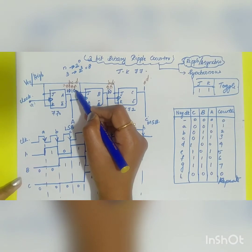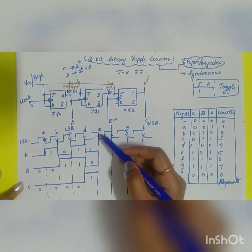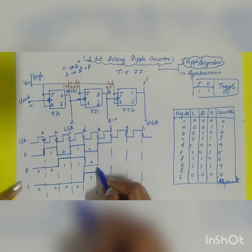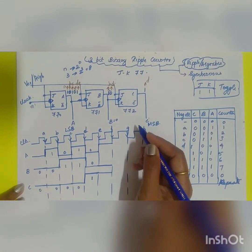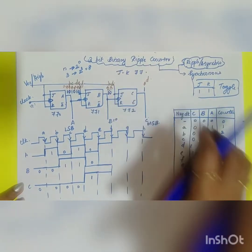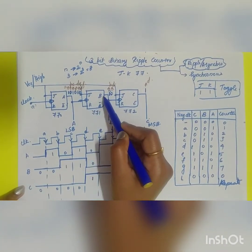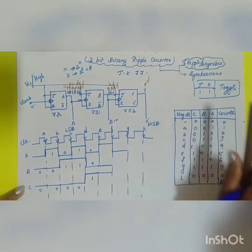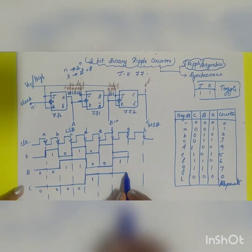During the next clock pulse E, A toggles from 0 to 1. Since A goes high (positive), B and C remain unchanged. During clock pulse F, A toggles from 1 to 0. This triggers flip-flop 1, so B changes from 0 to 1. Since B goes to 1 (positive), C remains unchanged.